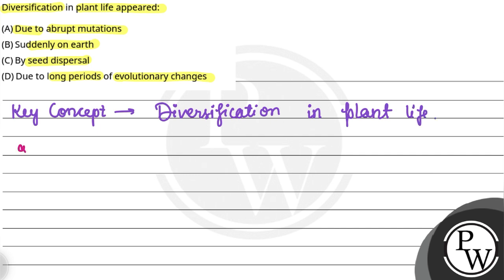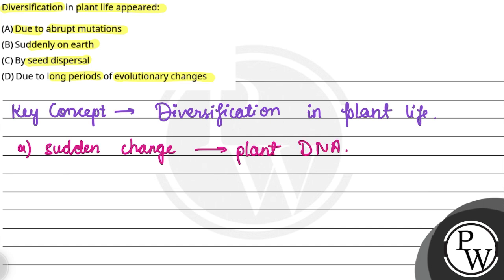Option A है — due to abrupt mutations. Abrupt mutation मतलब sudden change, अचानक से plant के DNA में change हो जाना। यह mutation genetic variation में contribute करता है, और अगर genetic variation होता है तो diversification होगा — तो यह एक positive answer बनता है।